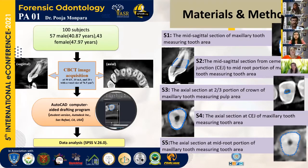Coming to the materials and methods. In this study, 100 subjects are included, of which 57 are male and 43 are female. The mean age of males is 40.87 years and in females, 47.97 years.